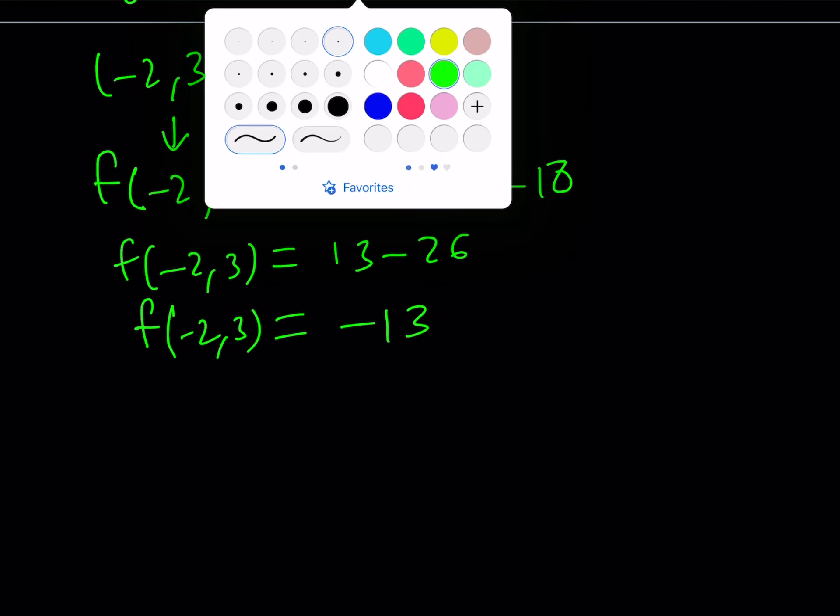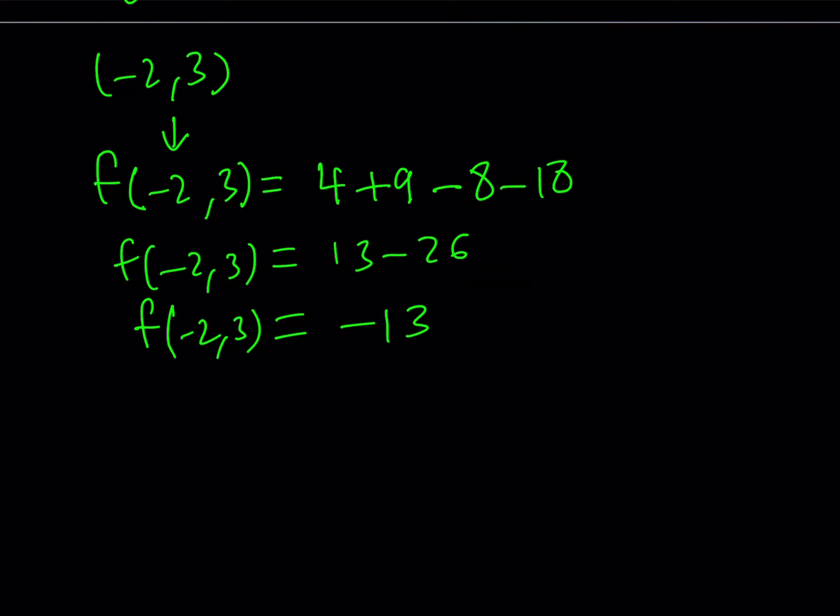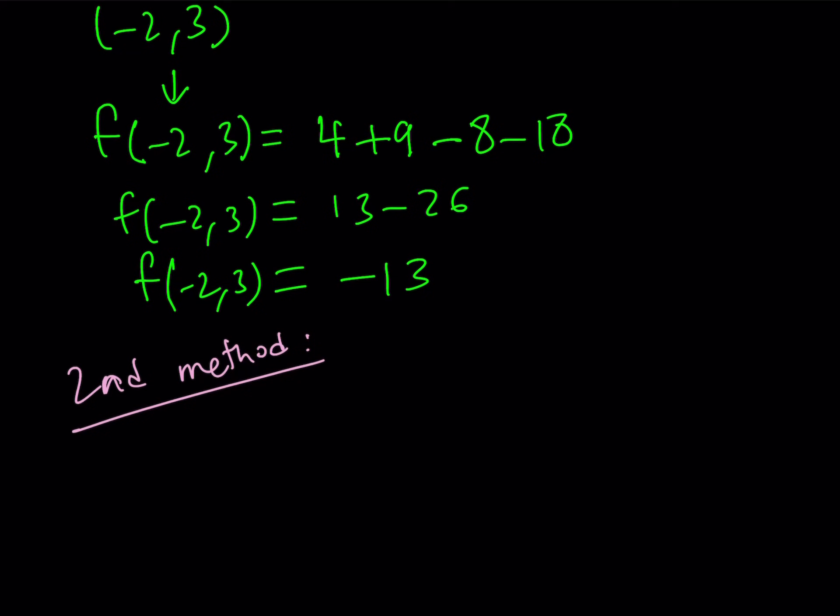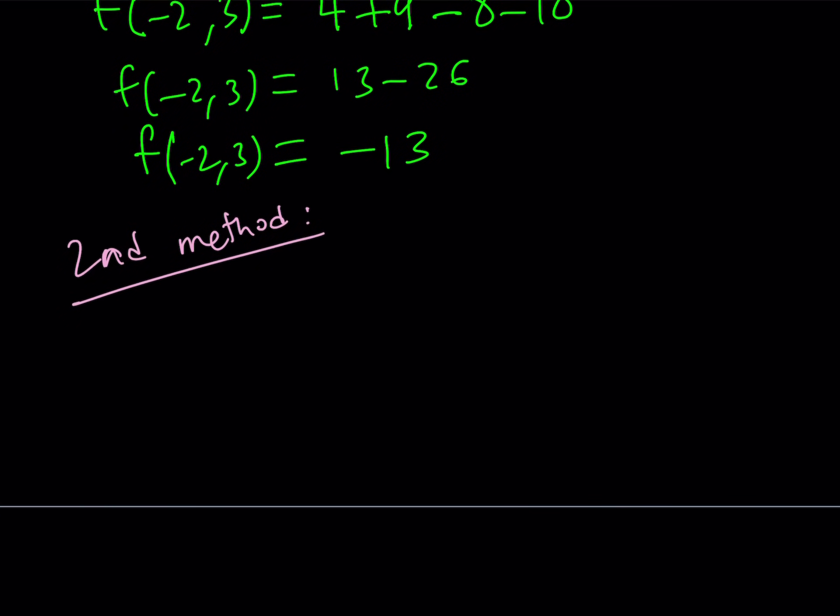Let's go ahead and take a look at the second method. The second method is a different and actually simpler method. I'll take my expression x squared plus y squared plus 4x minus 6y and then I'll be putting the x terms together and the y terms together and then I will be completing the square.